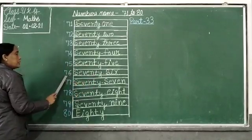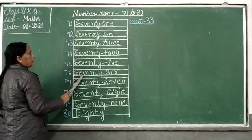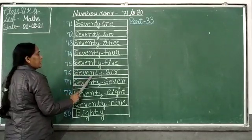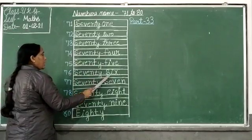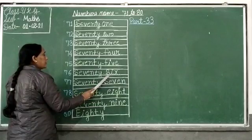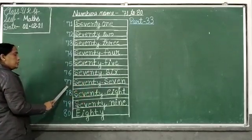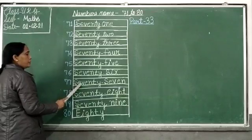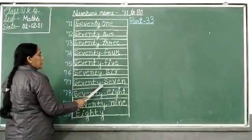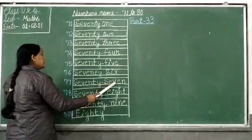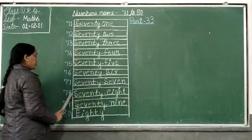76: S-E-V-E-N-T-Y 70, S-I-X 6, 76. 77: S-E-V-E-N-T-Y 70. Seventy 70, S-E-V-E-N 7, 77. 78.